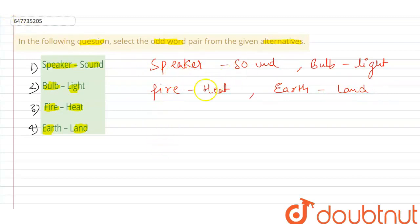So guys, the speaker produces sound. Sound is produced by the speaker. Then the bulb produces light.